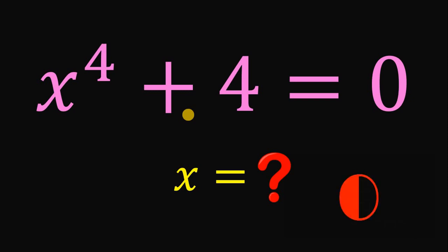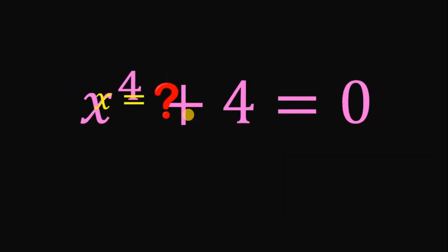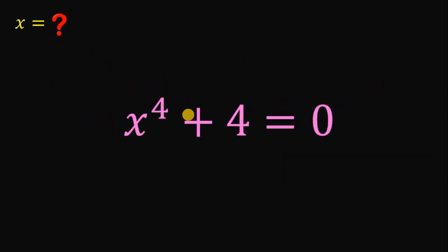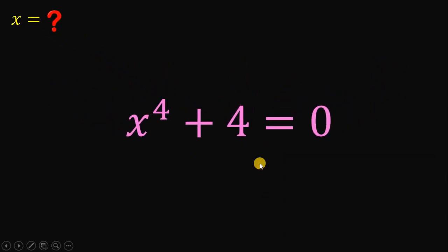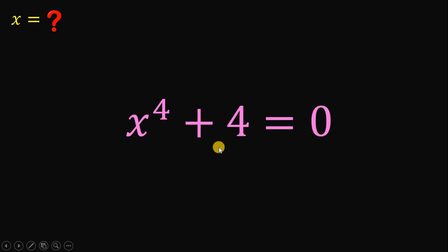Now let's answer this question together. To answer this, what we're going to do is factor this equation. I know what you're thinking — x to the fourth power plus 4 is not factorable. Not yet factorable. But we will force x to the fourth power plus 4 to be factorable.